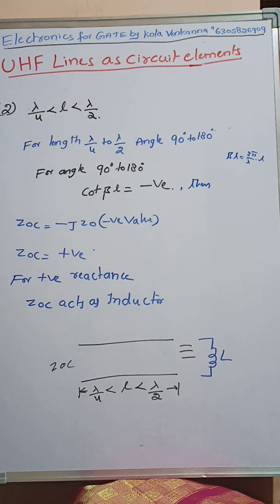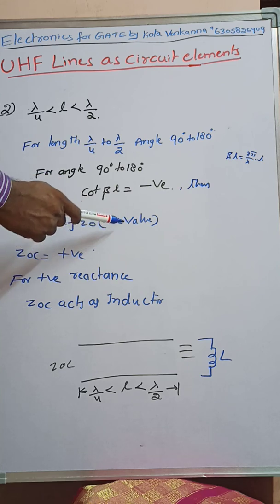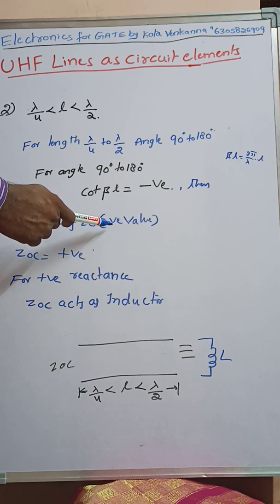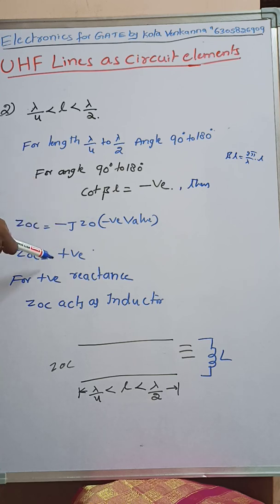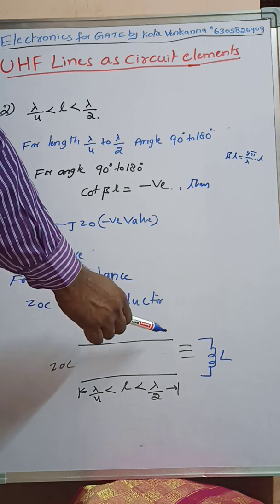The open circuit input impedance Z_OC = -jZ₀ cot(βl). Since cot(βl) is negative in this range, negative multiplied by negative gives a positive value. So Z_OC becomes a positive reactance. When Z_OC is positive reactance, the transmission line acts as an inductor. Therefore, for length between λ/4 and λ/2, the open circuit transmission line acts as an inductor.